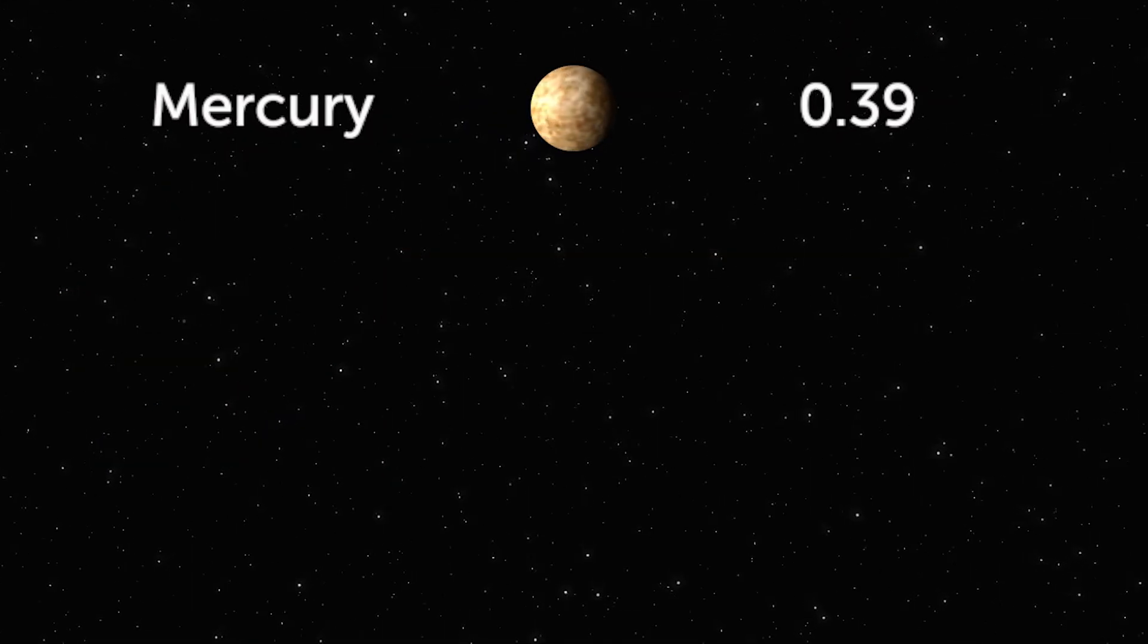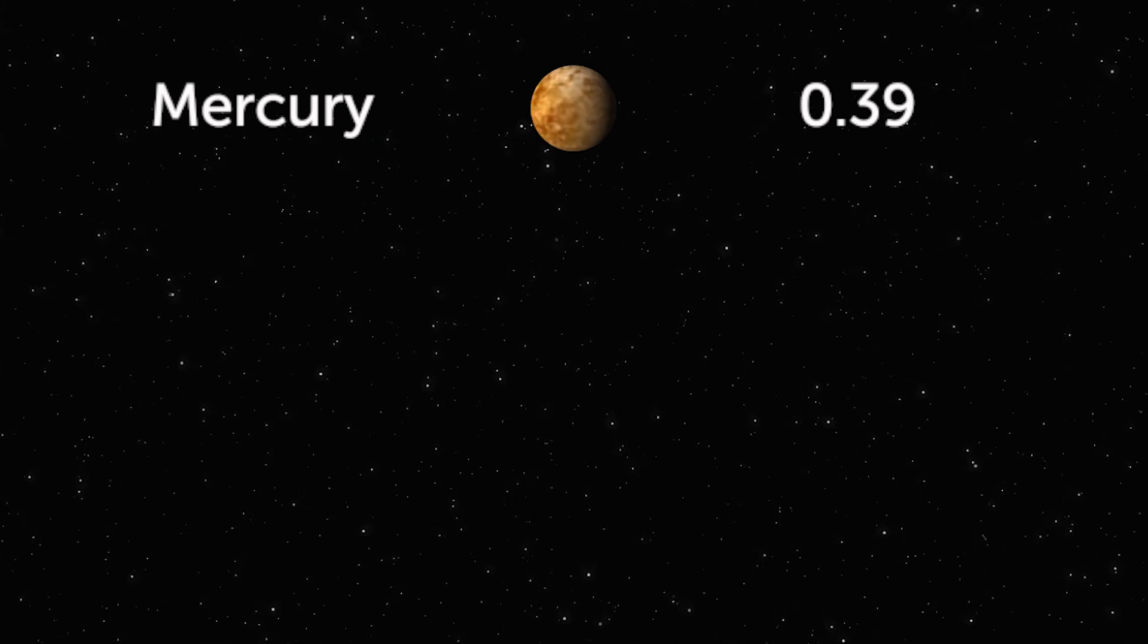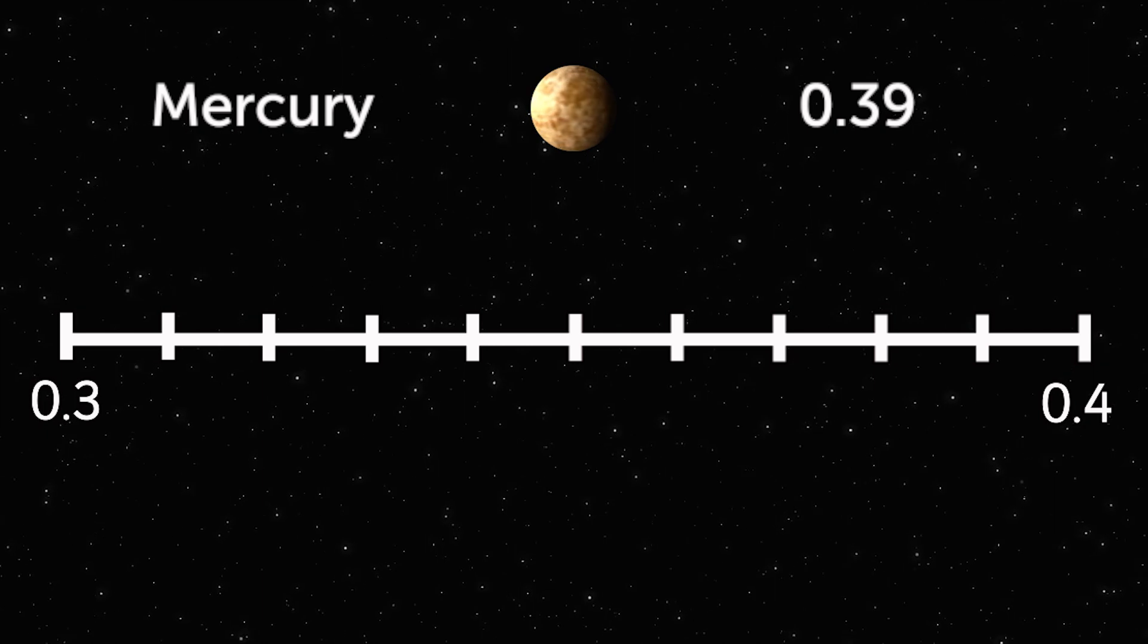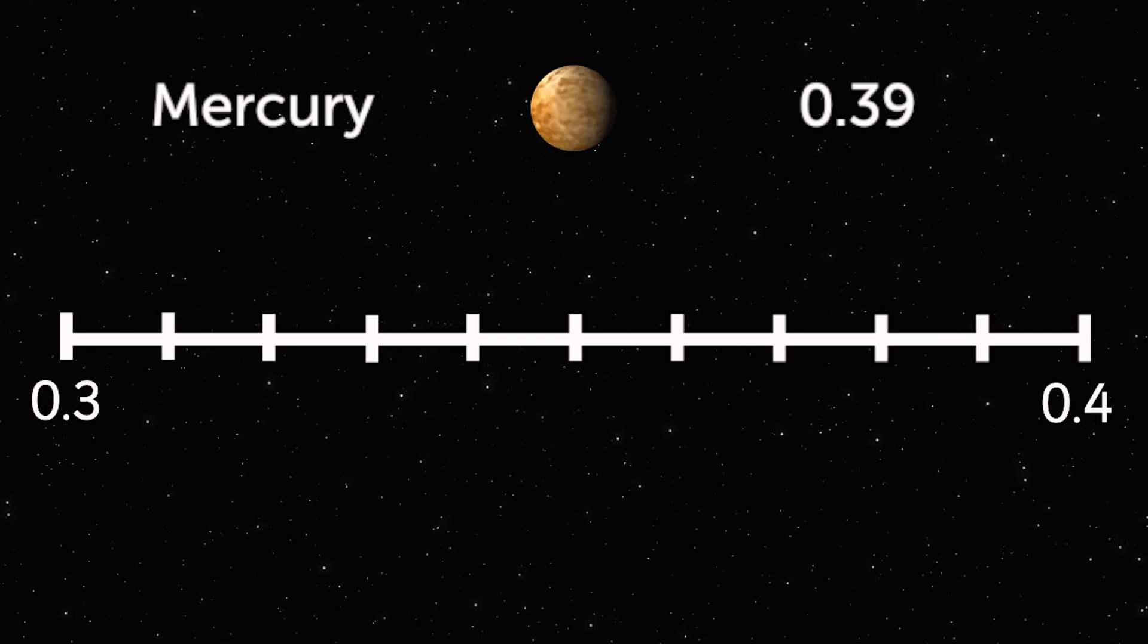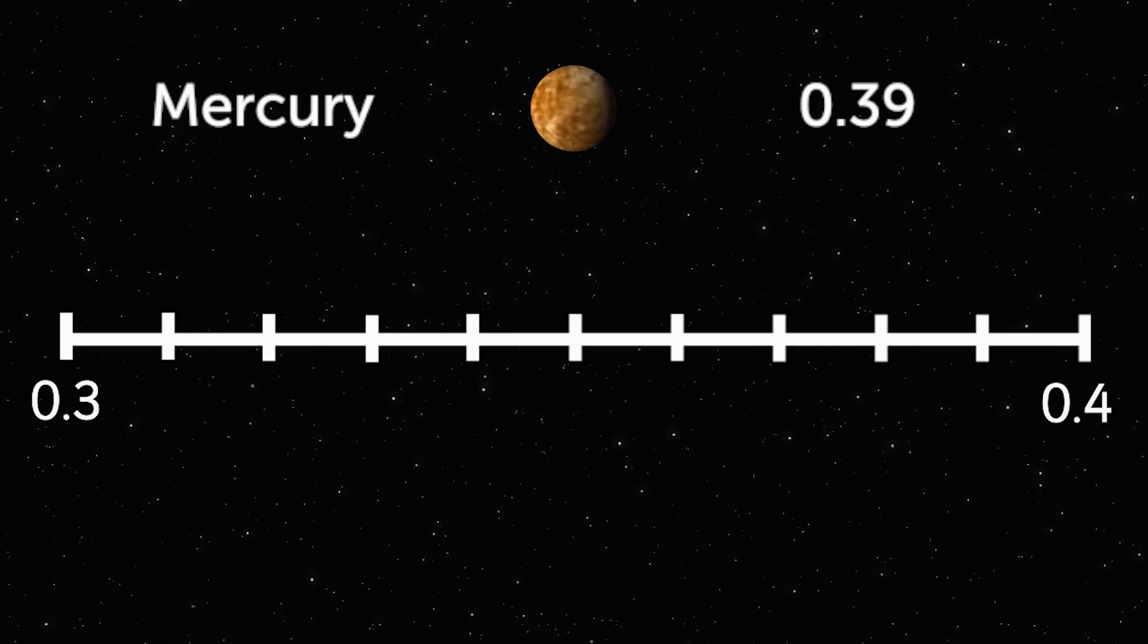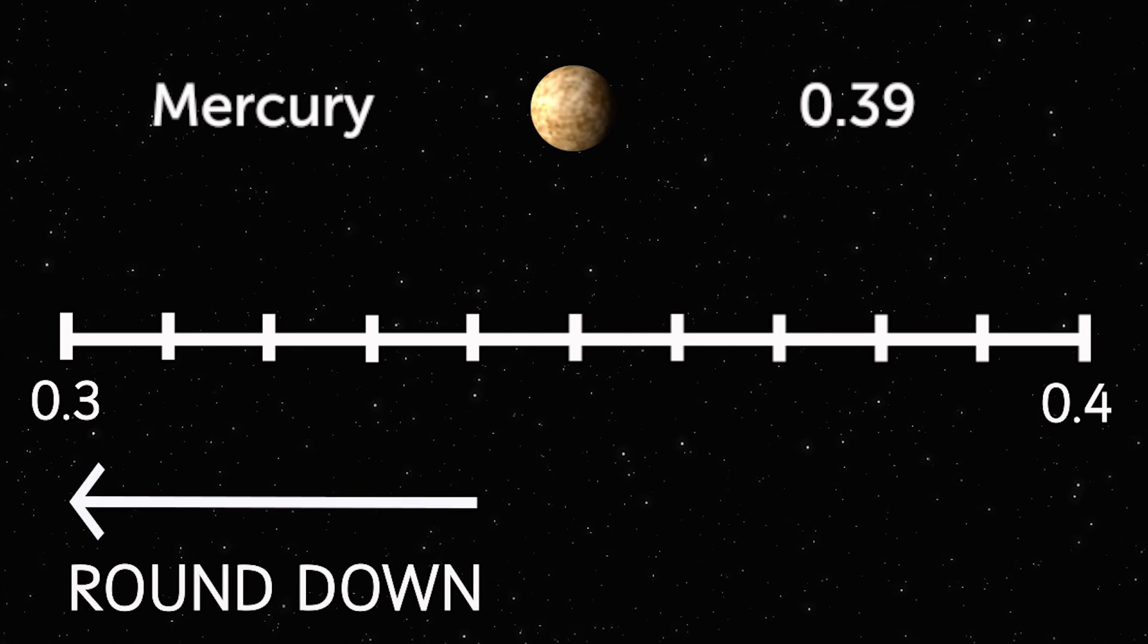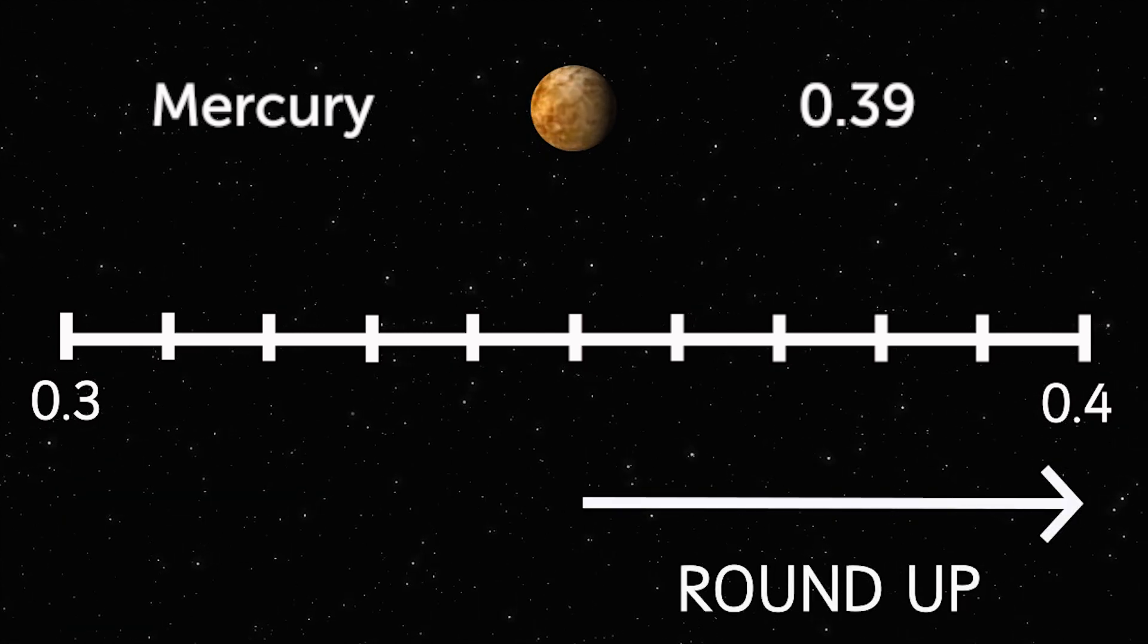Mercury is the closest measuring 0.39 astronomical units from the Sun. This is between 0.3 and 0.4 AUs. You need to look at the digit in the hundredths place to work out if you need to round down to 0.3 or up to 0.4.